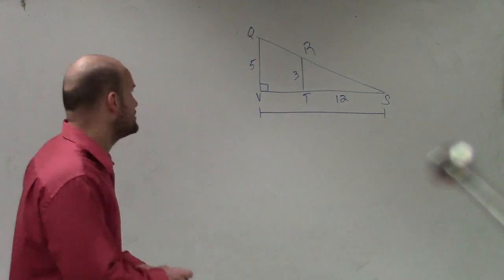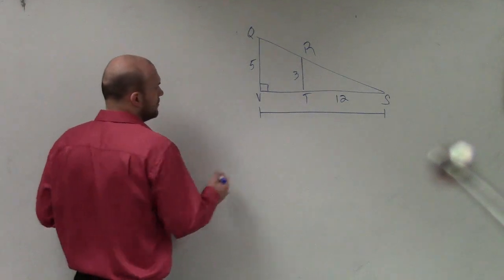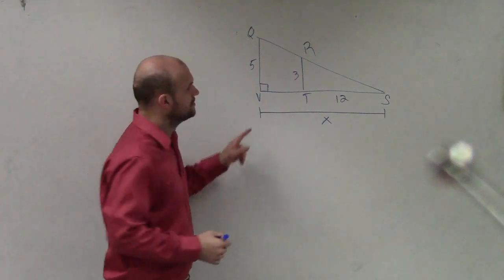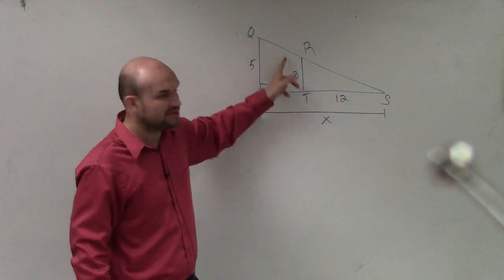OK. So, oh I'm sorry, this is x. Do you kind of see like this bigger triangle and the smaller triangle? You can take that back up.